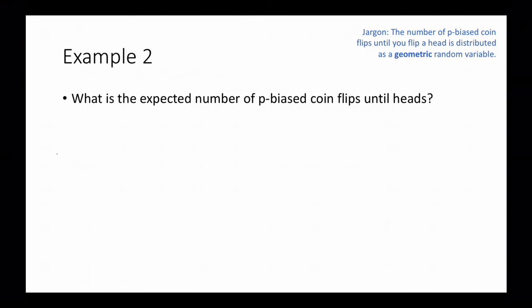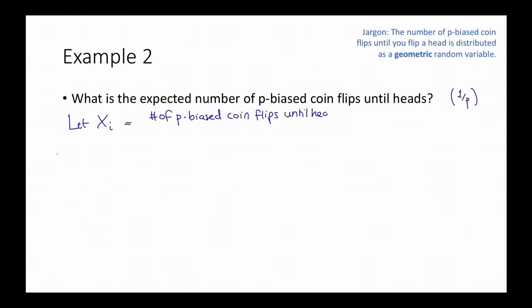What is the expected number of p-biased coin flips until you get a head? You might already know the answer is 1/p, but let's see this rigorously. Let X_i equal the number of p-biased coin flips until heads, starting with flip i. The thing we're interested in is E[X_1]. There are multiple sources of randomness here — in the first flip, the second flip, the third flip, and so on.